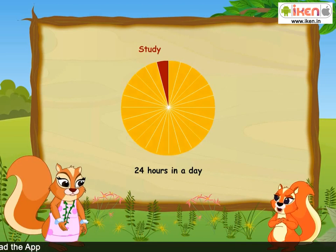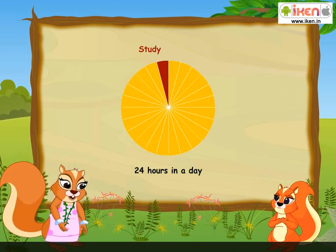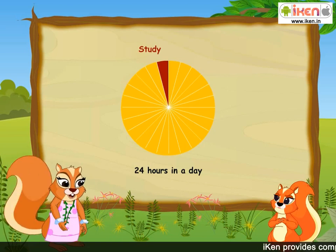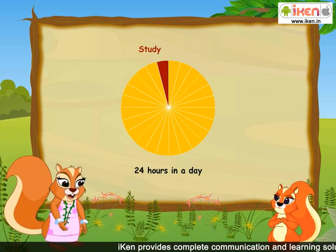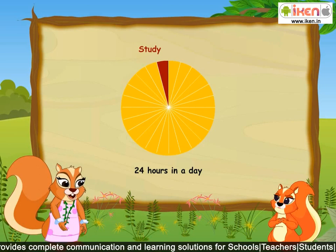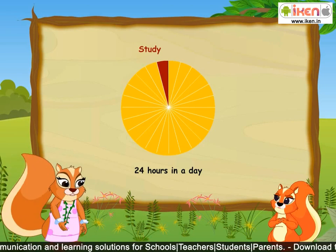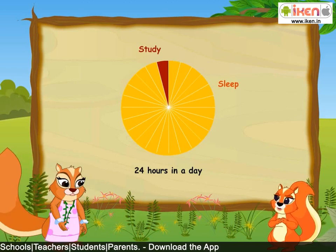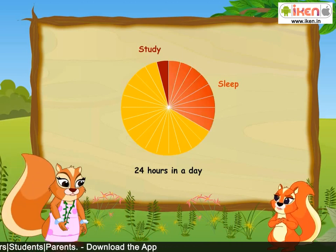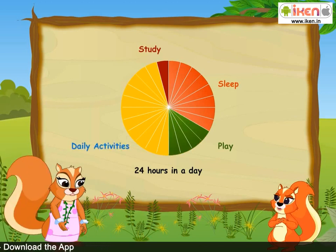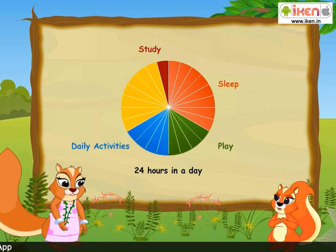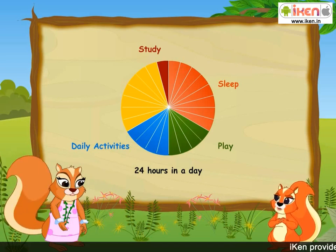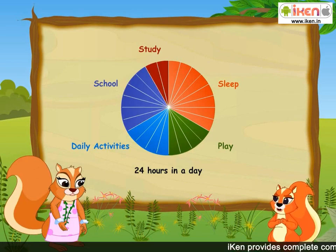But what will I do with the other 23 hours? Can you mark more parts of the cake in the same way to show how you spend your time? Remember, each slice of the cake represents one hour of your day. I sleep for 8 hours, play with my friends for 4 hours. For the next 4 hours I am bathing, eating and doing other daily activities. I am at school for 6 hours and I study for 1 hour.